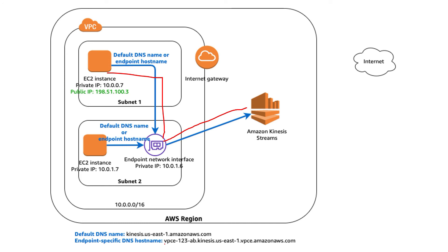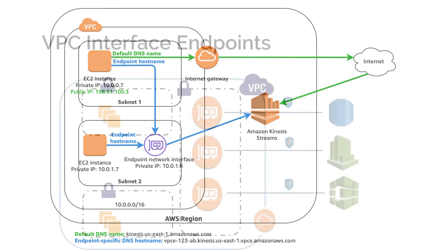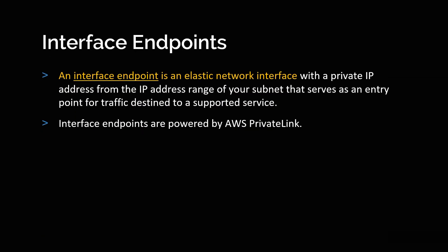Your EC2 instance will directly communicate with this endpoint-specific DNS hostname, which knows which AWS resource to connect to. This is again a private link — you don't have to connect to the public internet, so your communication is totally safe and secure. The network interface endpoint is an elastic network interface with a private IP from the IP address range of your subnet that serves as an entry point for traffic destined to a supported service. Each ENI has a private IP address assigned based on the range you give when creating your subnet. Interface endpoints are powered via AWS PrivateLink.